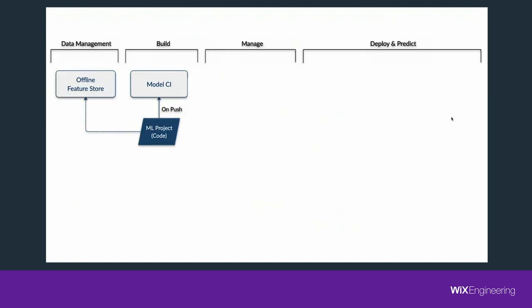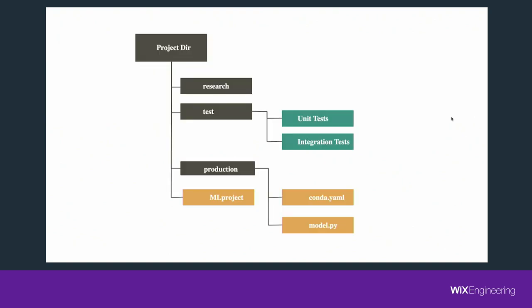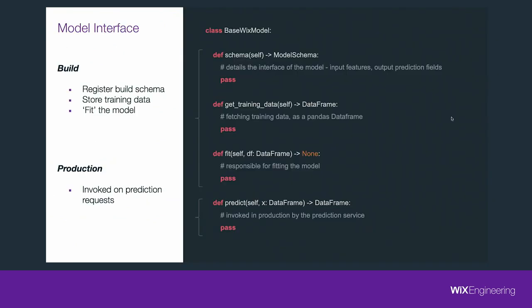Next up is model build. The system uses MLflow internally — it's an abstraction layer for a model repository and CI systems. ML projects managed via the platform should follow a certain structure, very similar to what was just shown. The important detail is the model.py file, which should include a class inheriting from our base WixModel. This is the high-level interface that all models deployed via the platform should adhere to and implement.